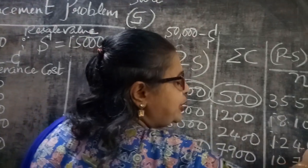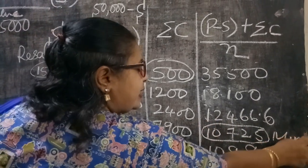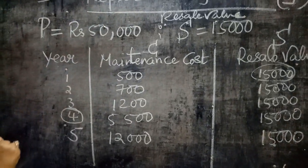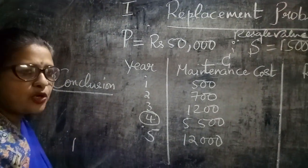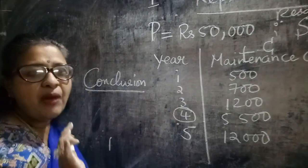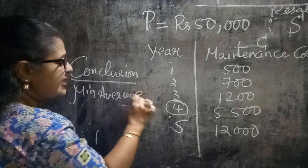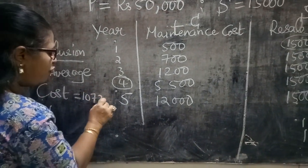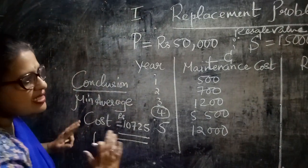Now you must find the minimum value in that last column. The minimum value corresponds to year 4. So your conclusion is: the machine has to be replaced after 4 years, and the minimum average cost is rupees 10,725.